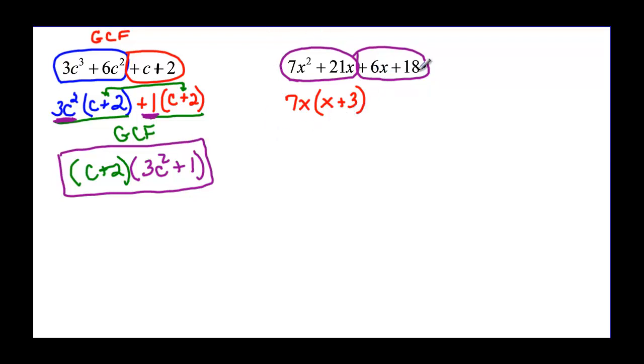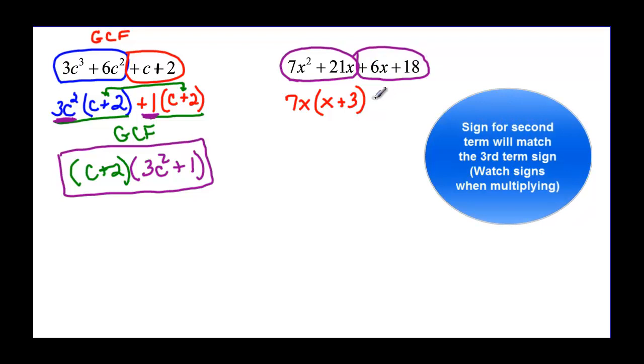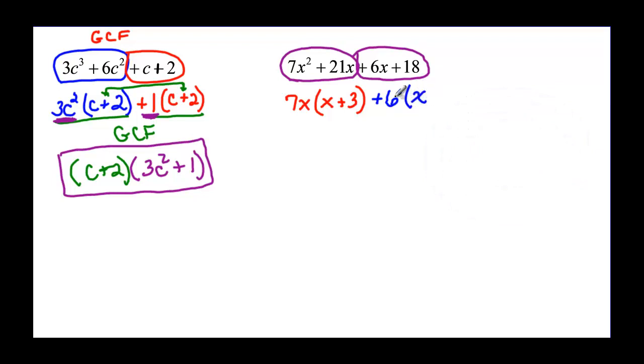Now I'm looking at my second two terms, and I want to write my sign when I write my common factor. 6x and 18 have a positive 6 in common, and then I need a factor of x to give me 6x when I distribute, and 6 times 3 would be 18.